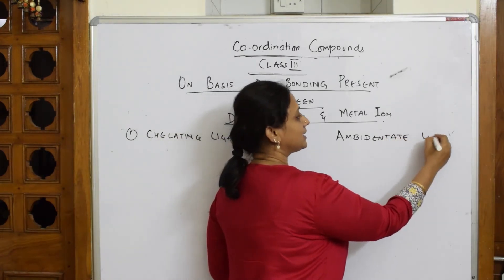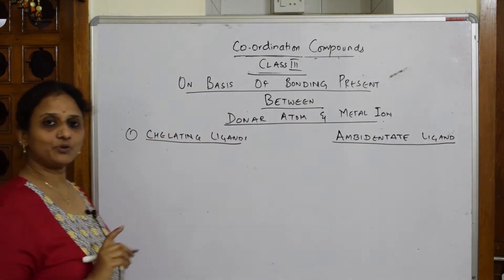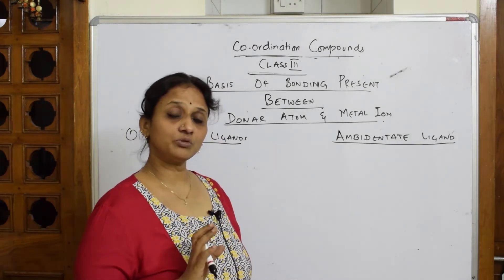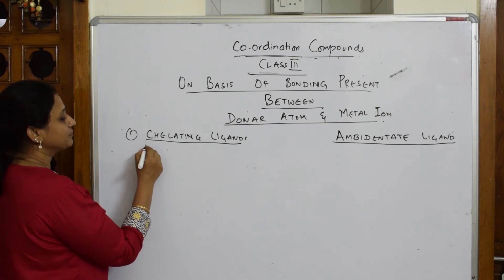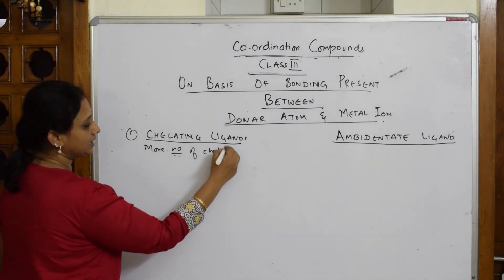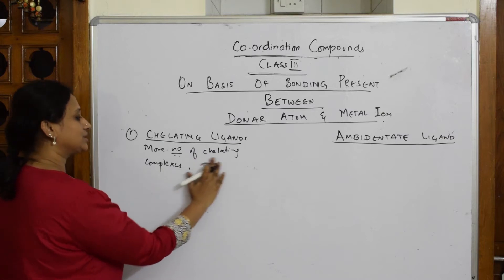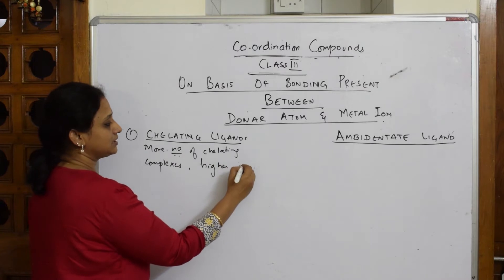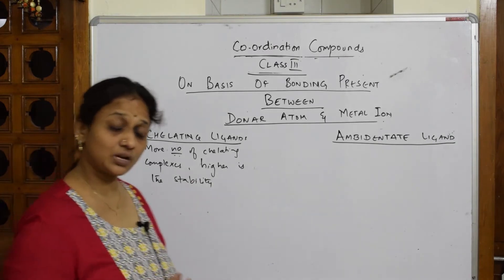Let me come back to chelating ligands. The first important thing, which is very useful for your exam, is: more number of chelates formed means more stable is the complex. Remember that. Writing it down: more number of chelating complexes means higher is the stability.